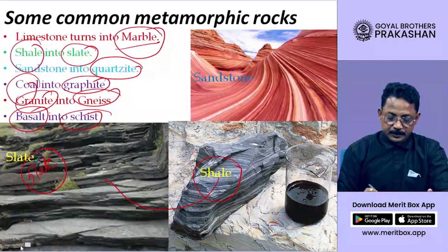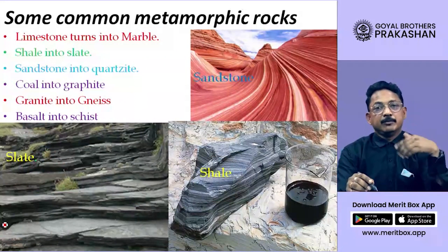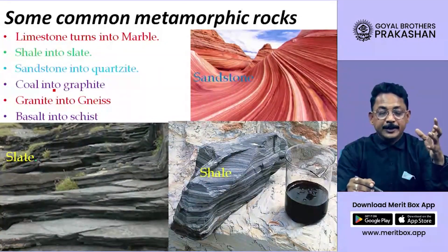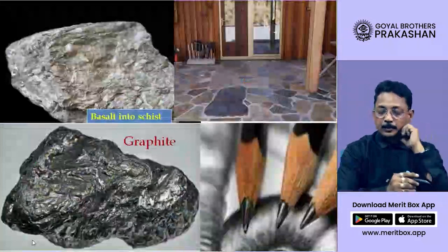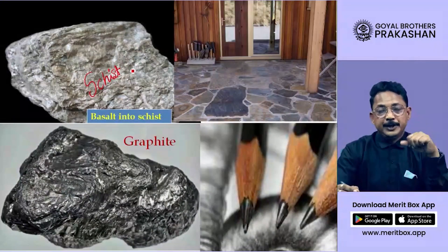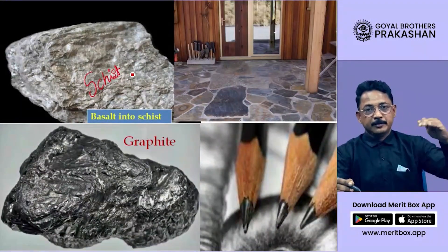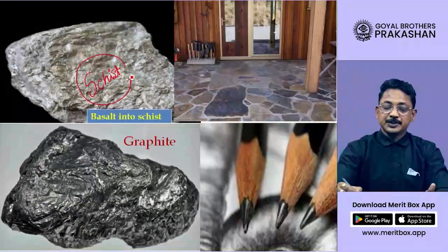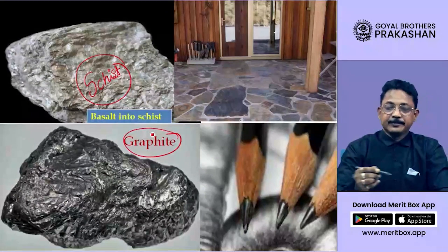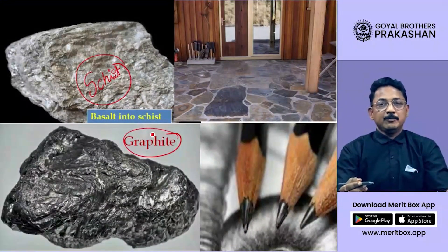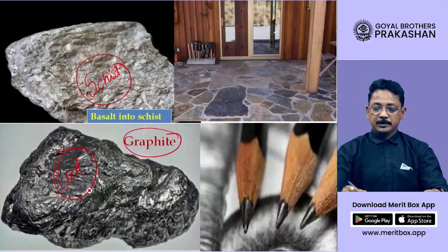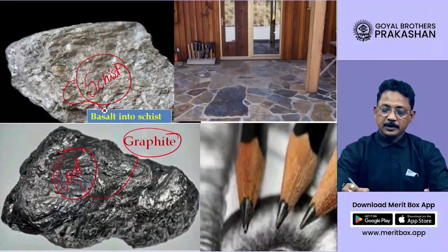Please remember which rock gets converted into which type: coal into graphite, shale into slate, and so on. The schist rock you see here — initially basalt rock was there where a river was flowing, and that basalt has got converted into schist. Basalt is igneous rock; schist is metamorphic rock. Graphite is also a metamorphic rock, formed from coal, which is a sedimentary rock. So sedimentary rock turns into graphite; igneous rock turns into metamorphic.